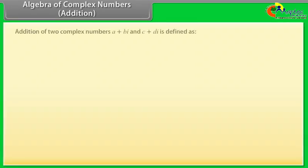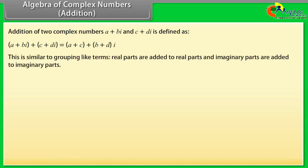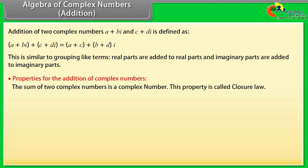Algebra of complex numbers — Addition. The addition of two complex numbers (A plus B iota) and (C plus D iota) is defined as: (A plus B iota) plus (C plus D iota) equals (A plus C) plus (B plus D) iota. This is similar to grouping like terms — real parts are added to real parts, and imaginary parts are added to imaginary parts.